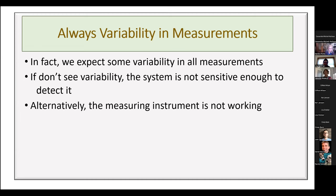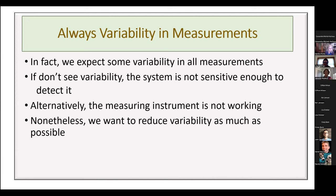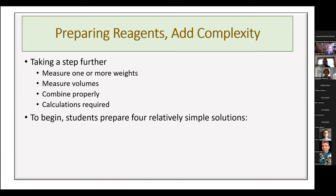Sometimes a rock-solid measurement means something's wrong. This happens in associate degree classes: a student will say 'my pH is rock solid — 7.62, 7.62, 7.62 — I even did the procedure again and it's still 7.62.' And it turns out the student did not immerse the probe in the sample.